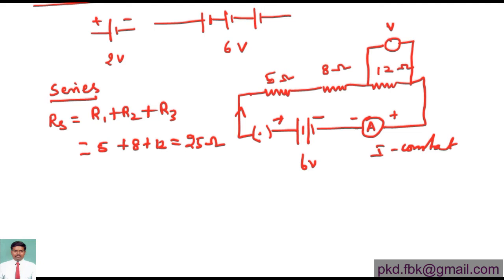Once the total resistance is done, the current can be easily calculated. V equals IR, so I equals V by R. The voltage value is six and the total resistance is 25, so by dividing it: 0.24 amperes. The current through the circuit is 0.24 amperes.